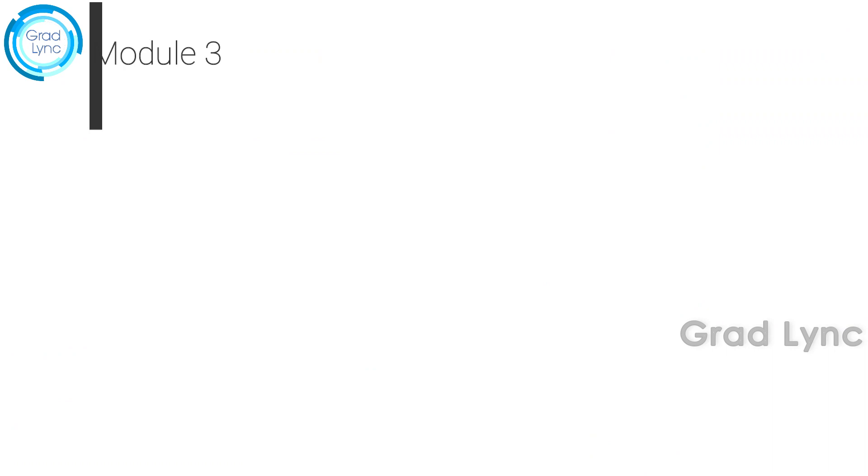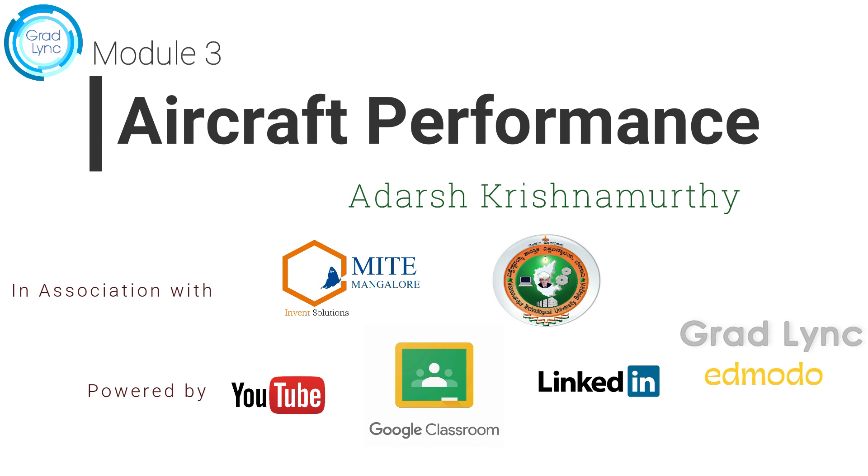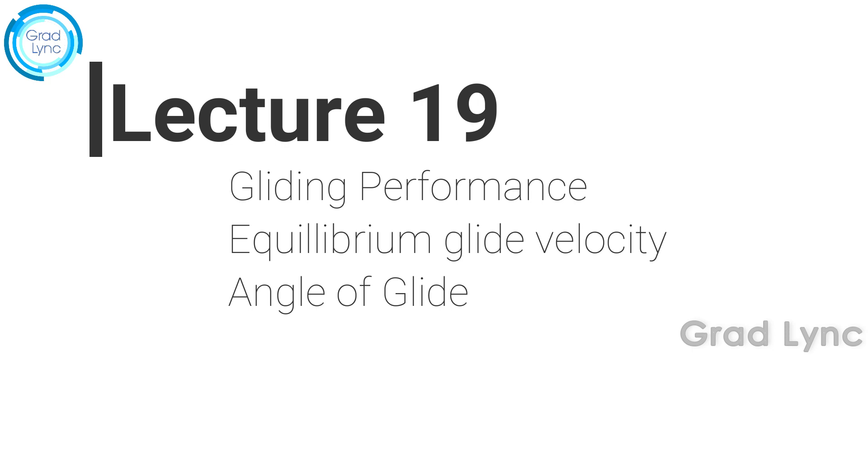Hi friends, welcome back to this lecture series on aircraft performance. In the last lecture we understood various parameters in aircraft performance like the rate of climb, the angle of climb, both extreme cases — maximum angle of climb and the corresponding velocity — as well as the rate of climb analysis. Now we move on to a more interesting performance parameter called gliding flight.